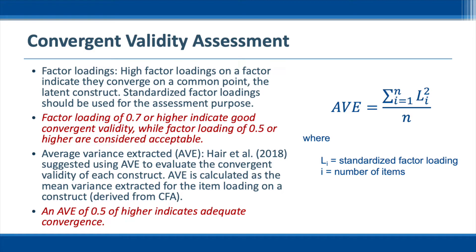Another common method is using average variance extracted, or AVE, to evaluate the convergent validity of each construct. AVE is calculated as the mean variance extracted for the item loadings on a construct. This is the formula for AVE using factor loadings derived from confirmatory factor analysis. First we need to square the factor loadings for all items, add them up, and divide by the total number of items. The rule of thumb is that an AVE of 0.5 or higher indicates adequate convergent validity. It is recommended to use both factor loadings and AVE to evaluate convergent validity.